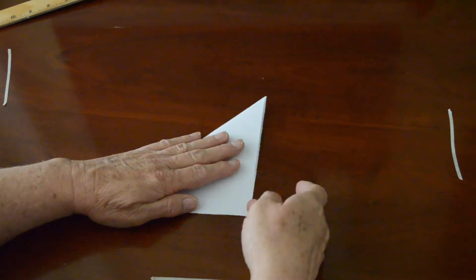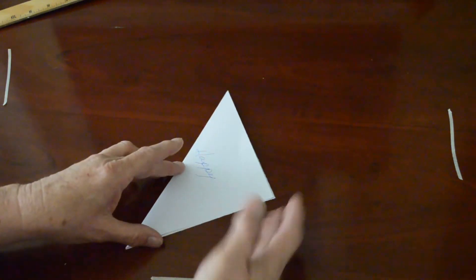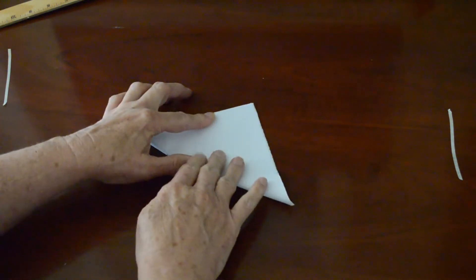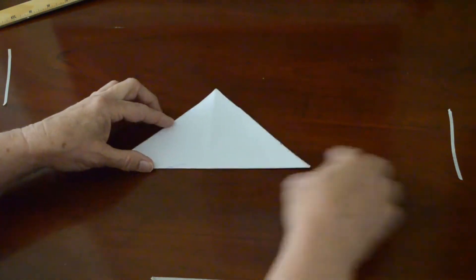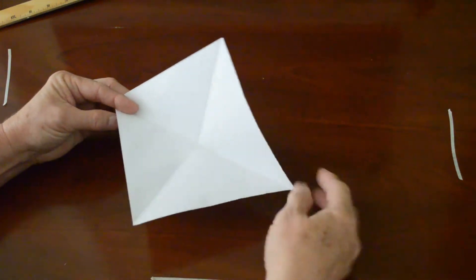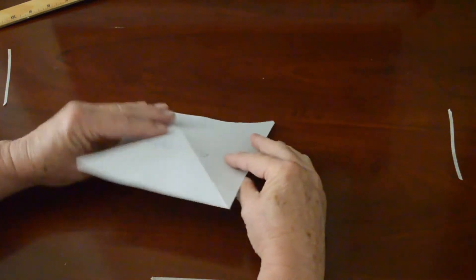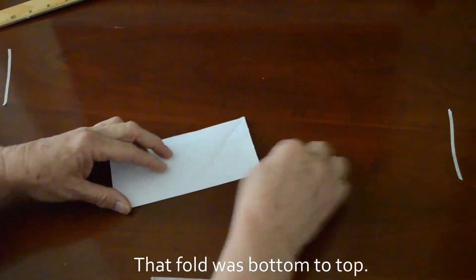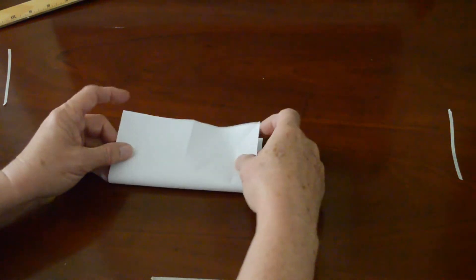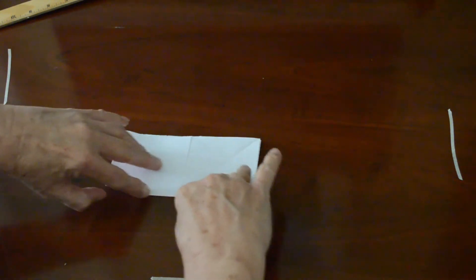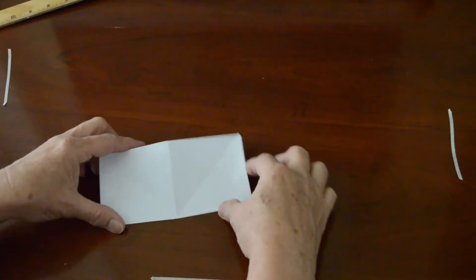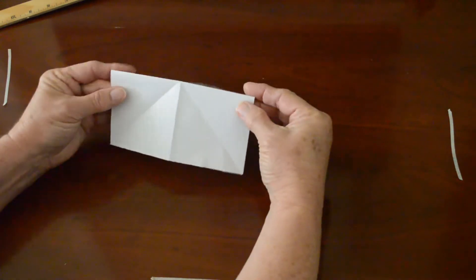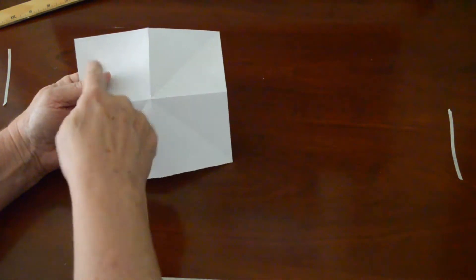And we'll fold one corner to the other. Open it up and then fold this corner to the top. And this is going to give us valley folds diagonally. And then we're going to flip it over and we're going to fold the top to the bottom. Open that up, turn it this way, and fold. Make those creases pretty good.